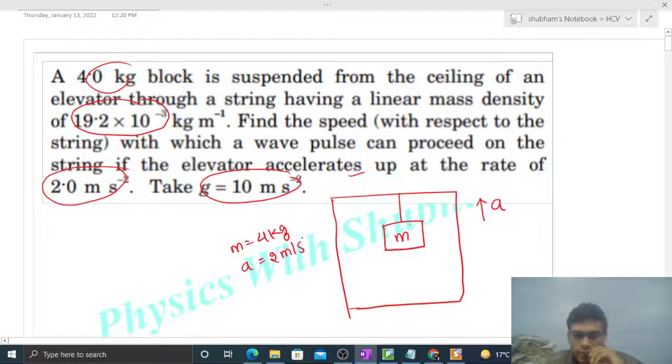So a is given as 2 m/s². We have to find out the speed of the transverse wave on this string. The speed of the transverse wave on the string is √(T/μ), which is the square root of tension divided by linear mass density.